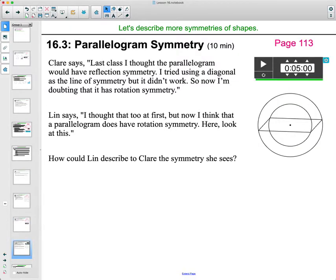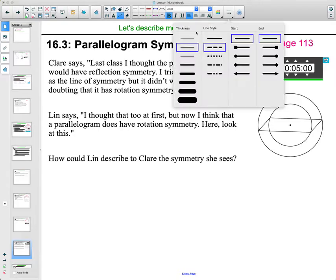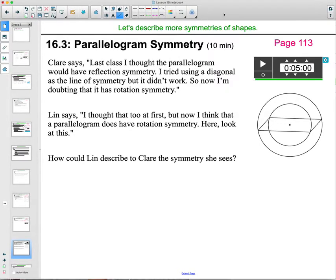I'm just going to read that for you here. So it says, Claire says, last class I thought the parallelogram would have reflection symmetry. I tried using the diagonal as the line of symmetry, but it didn't work. Let me get this here. So I thought it had reflection symmetry, it didn't work. So now I'm doubting that it has rotation symmetry. So remember, reflection symmetry is where it folds over a line of symmetry. Rotation symmetry is where it rotates between zero and 360 degrees back on itself around its center point.